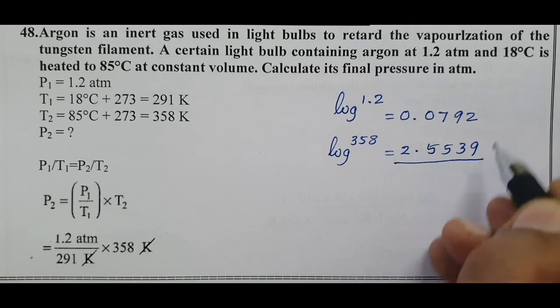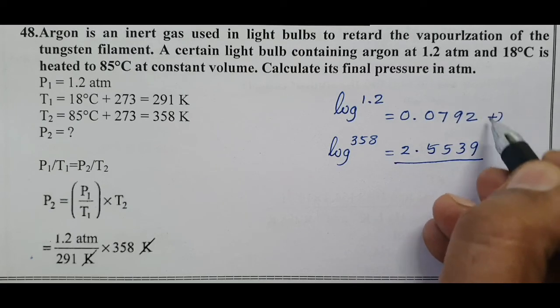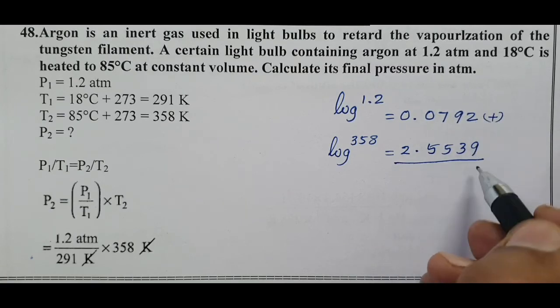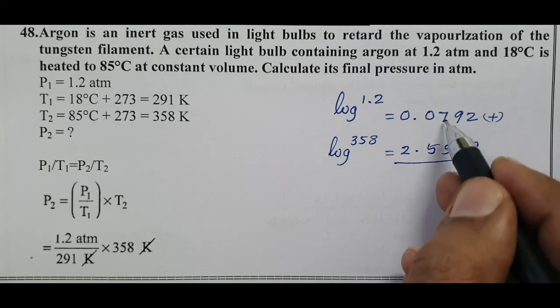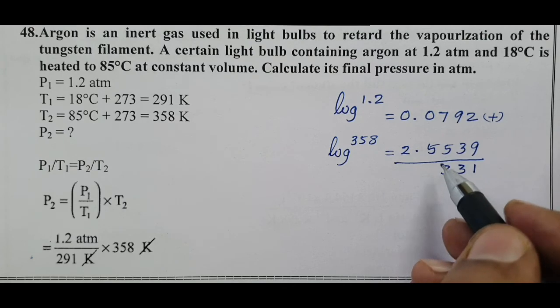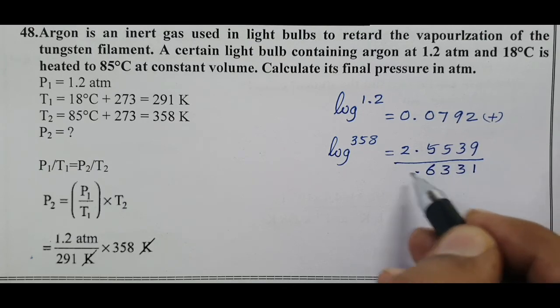Since there's a multiplication symbol, we have to add. 9 plus 2 equals 11, remaining 1. 10 plus 3 equals 13, remaining 1. 8 plus 5 equals 13, remaining 1. This gives us 2.6331.